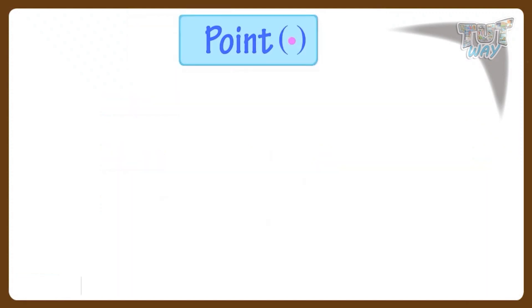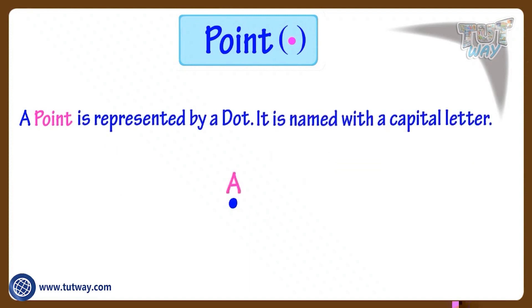Let's start with a point. A point is represented by a dot. It is named with a capital letter. Example, this is point A. Here are more examples of points. Here A, B, C, D are points.